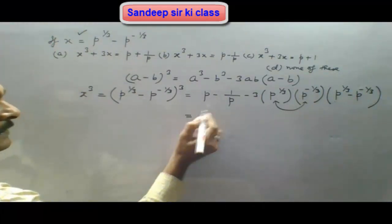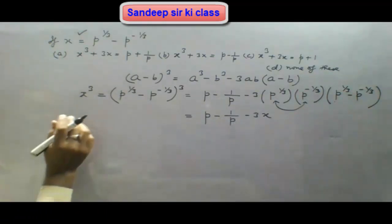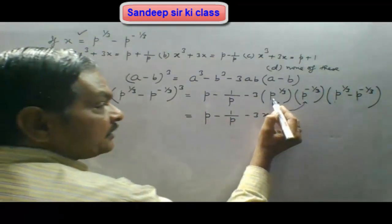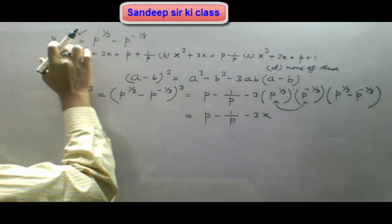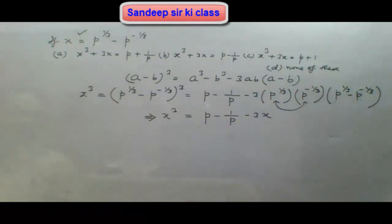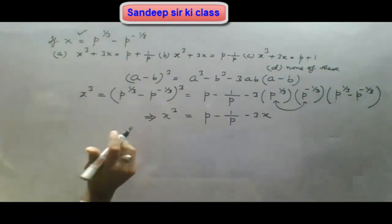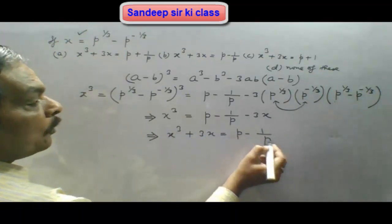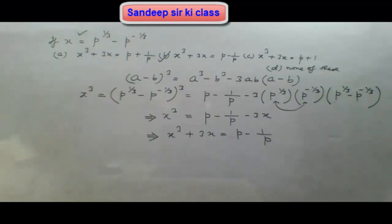So the right-hand side becomes p minus 1/p minus 3 times 1 times x, which is p minus 1/p minus 3x. Bringing minus 3x to the left-hand side gives plus 3x. So we get x cubed plus 3x is equal to p minus 1/p. We find that this is option B, so option B is the correct answer.